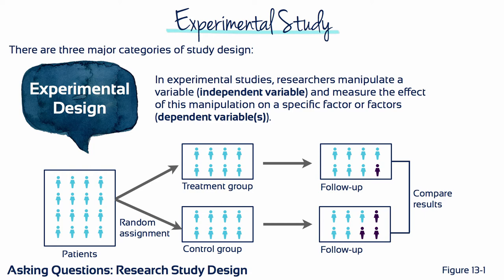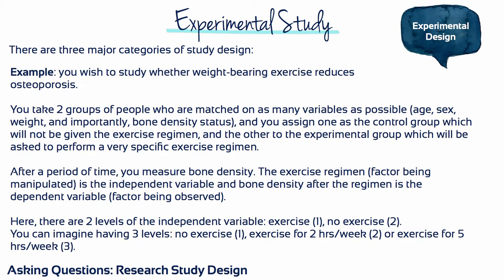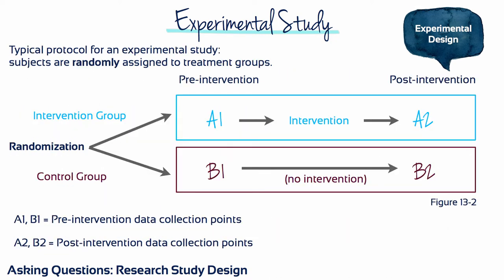These studies are used to test hypotheses. Studies are double-blind if neither the researcher nor the participant knows which participants are in the treatment group while the study is going on. Here's an example of an experimental study in which the researcher wants to know whether weight-bearing exercise reduces osteoporosis, along with a typical protocol in which subjects are randomly assigned to treatment groups.